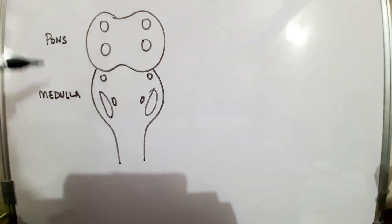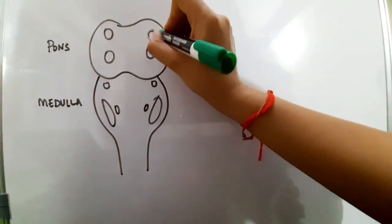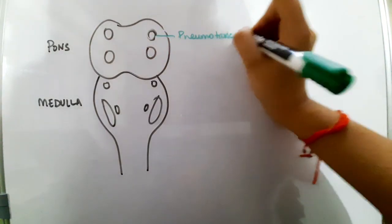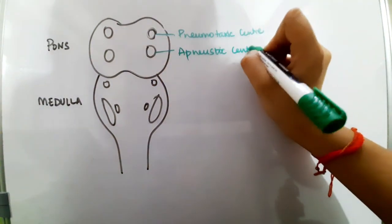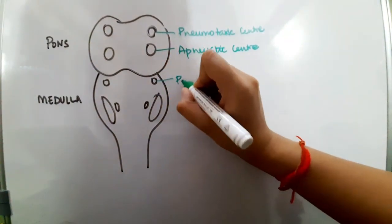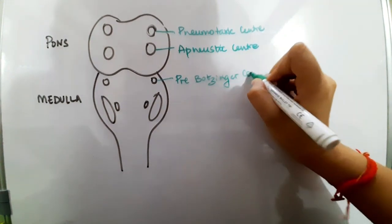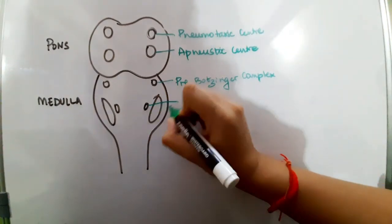The pons and the medulla contain centers that are responsible for the regulation of our respiration. The pons contains two centers: the pneumotoxic center and the apneustic center. The medulla contains the pre-bötzinger complex, the dorsal respiratory group, and the ventral respiratory group.